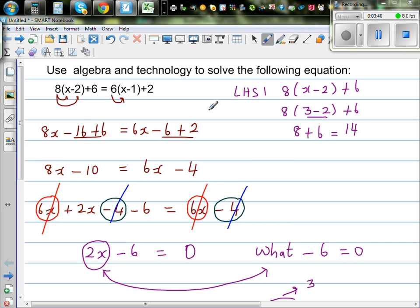So when x is 3, your left hand side is 14. So what's your right hand side? So your right hand side is, right hand side is 6 times 3 minus 1. Which is 6 times 2 plus 2. This is 12 plus 2. Which is 14.